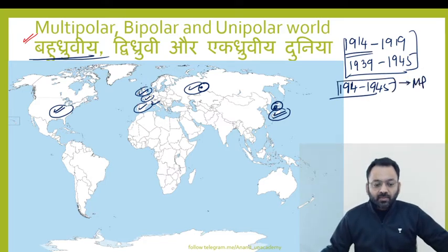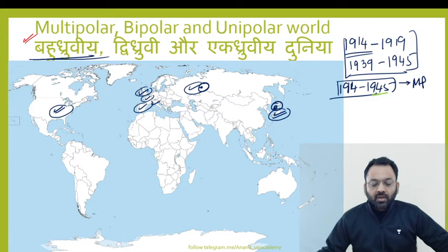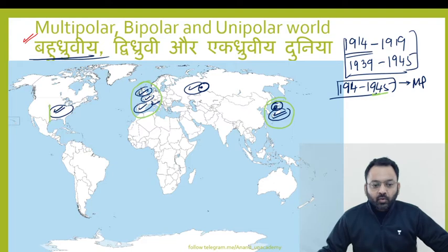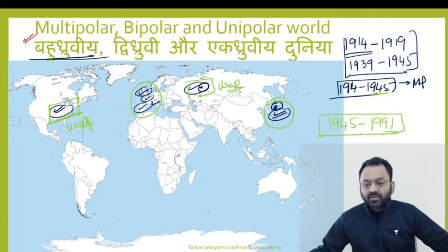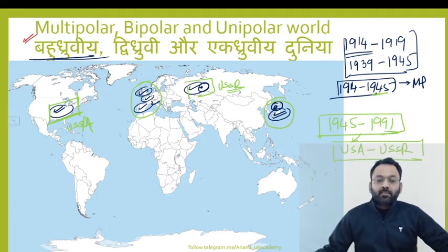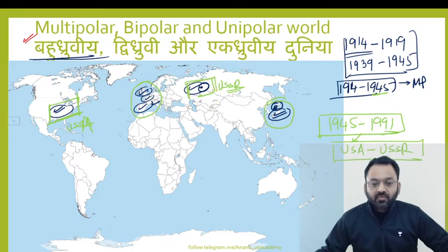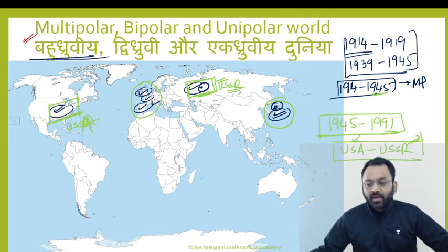After 1945, Europe was devastated and a bomb fell on Japan. So the world was left with only two supreme powers — the USA and the USSR. From 1945 to 1991, the world had two supreme powers, and the world was called the bi-polar world, because the two main power centers were the Soviet Union and America.